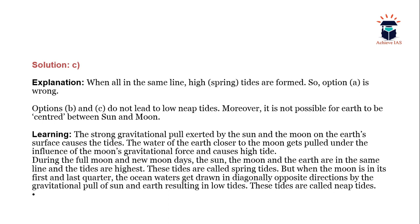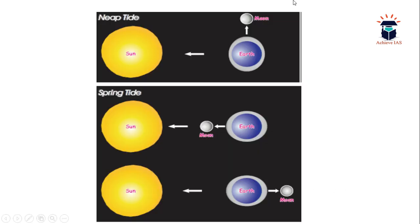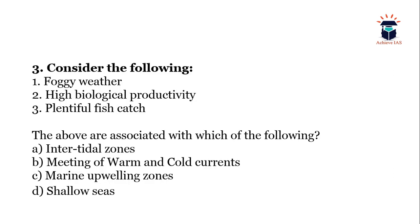When the moon is in its first and last quarter, the ocean waters get drawn in diagonally opposite directions because gravitational pull acts from two sides — from the sun and from the moon. These tides are called neap tides. As you can see here, when sun and moon are positioned such that their gravitational pull is divided, neap tides occur. When they are in the same line, spring tides — that is high tides — take place. Note that earth is not centered; it is closer to the moon since the sun-earth distance is much larger.